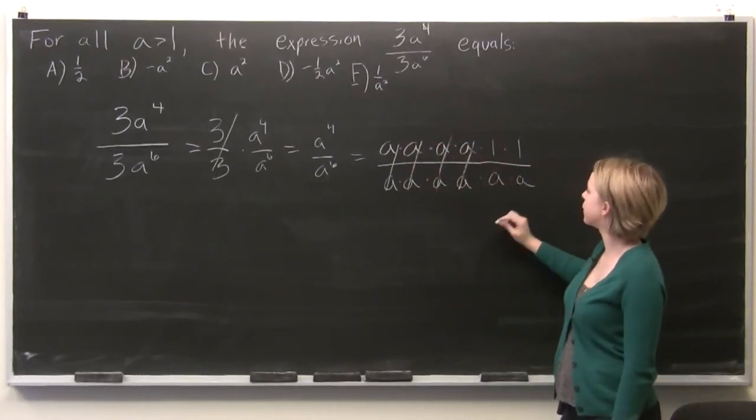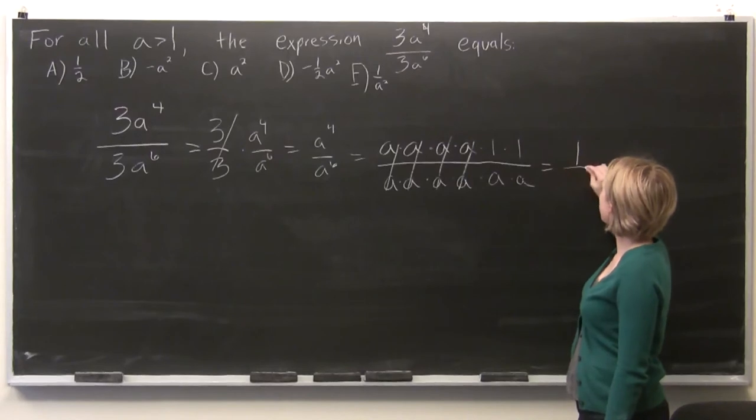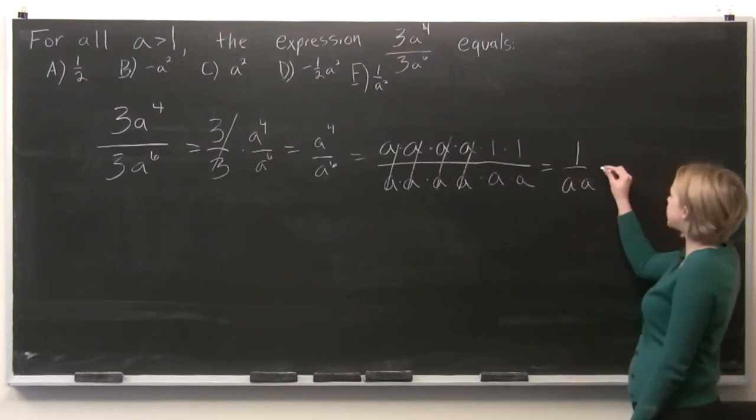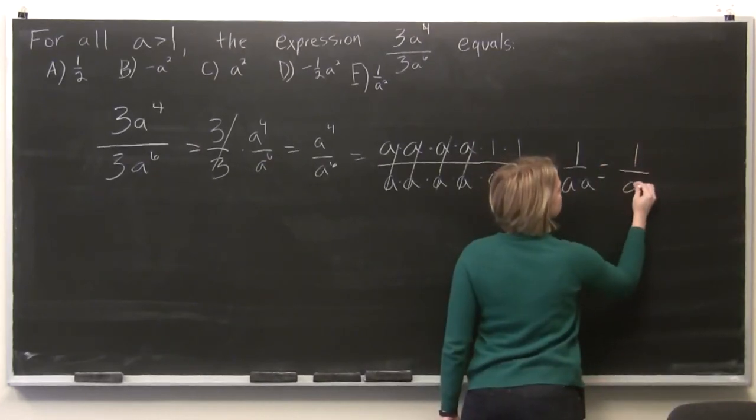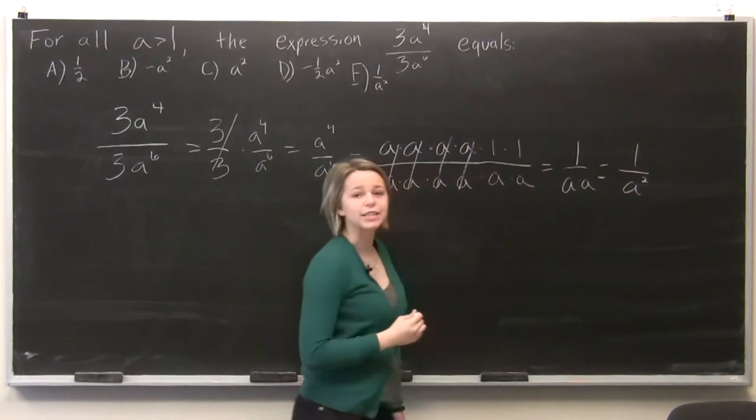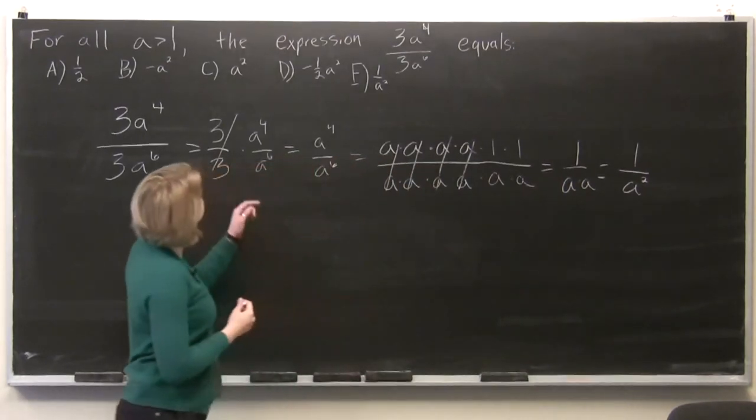And so what we're left with is 1 over a times a, which is equal to 1 over a squared. So we know that our answer choice is E.